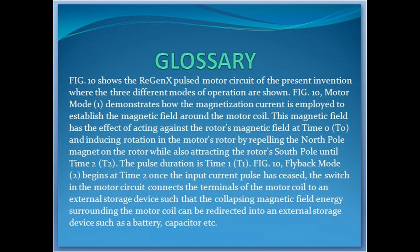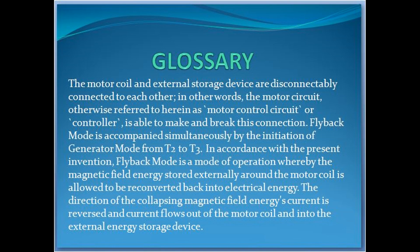FIG. 10 shows the Regenx pulsed motor circuit of the present invention where the three different modes of operation are shown. FIG. 10, motor mode 1, demonstrates how the magnetization current is employed to establish the magnetic field around the motor coil, which has the effect of acting against the rotor's magnetic field at time zero (t0) and inducing rotation in the motor's rotor by repelling the north pole magnet on the rotor while also attracting the rotor's south pole until time t2. The pulse duration is time t1. FIG. 10, flyback mode 2, begins at time t2 once the input current pulse has ceased. The switch in the motor circuit connects the terminals of the motor coil to an external storage device such that the collapsing magnetic field energy surrounding the motor coil can be redirected into an external storage device such as a battery or capacitor. The motor coil and external storage device are disconnectably connected to each other — the motor circuit (motor control circuit or controller) is able to make and break this connection.